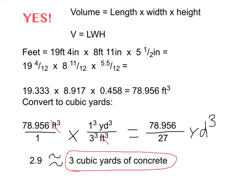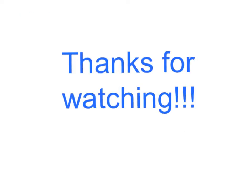And then on the bottom or in the denominator, 1 times 3 cubed, or 3 times 3 times 3, is 27. And then we have to divide 78.956 divided by 27 is again 2.9, which is approximately equal to 3 cubic yards of concrete that we need for our porch.